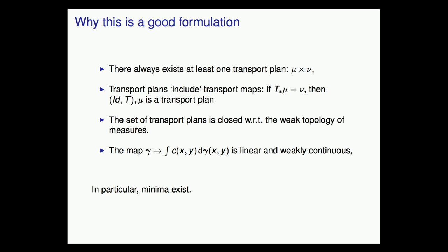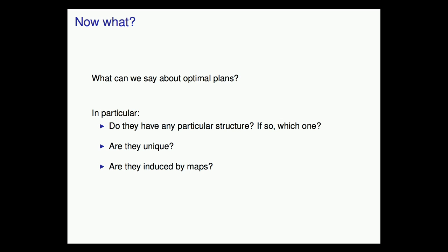Now that we have optimal plans, natural questions arise: Can we say something about their structure? Do we have Euler equations or structural properties? Are they unique, perhaps under conditions on the cost, the measures, or the spaces? And are optimal plans induced by maps — can we recover optimizers for Monge's formulation by solving Kantorovich's formulation?